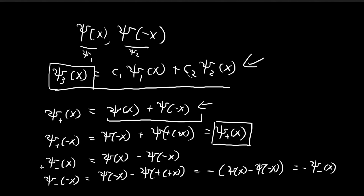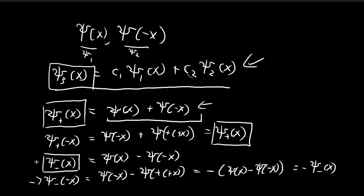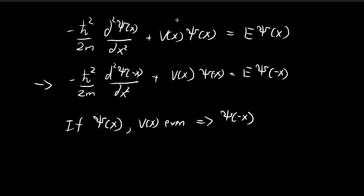So this property is satisfied, and we can also construct a solution that is an odd function. For these two solutions, we can construct an even function and an odd function, and both of these will also be solutions to the time-independent Schrödinger equation.